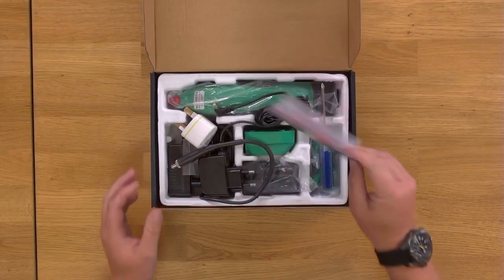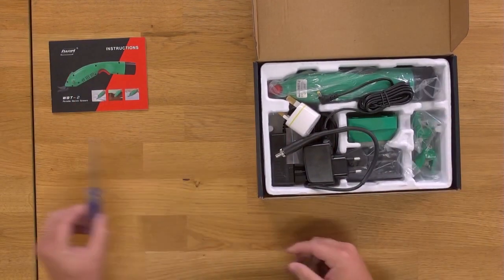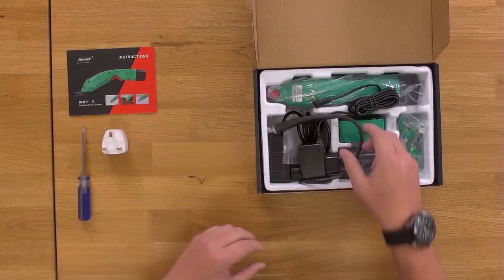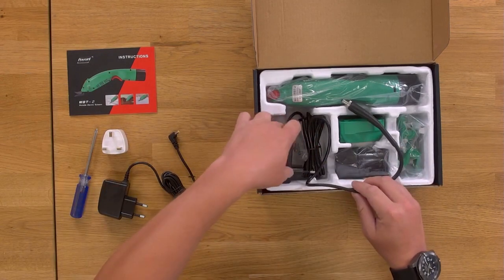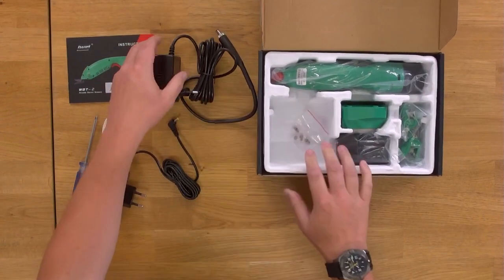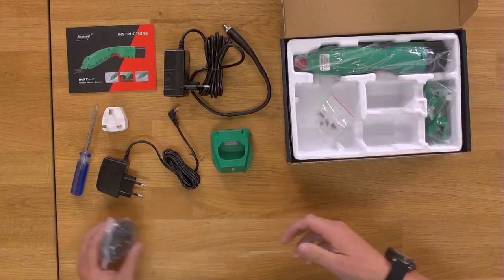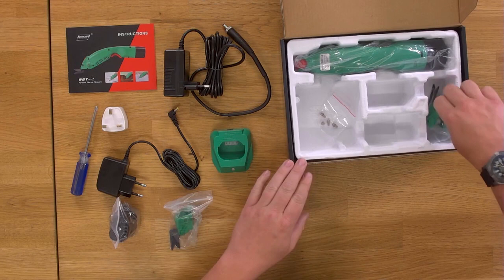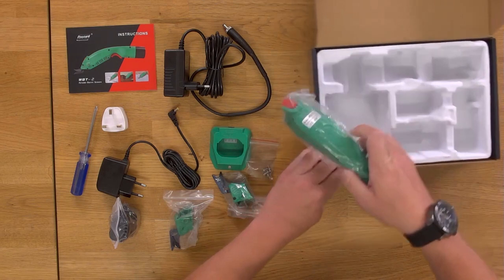What have we got in here? We've got your instruction manual, a screwdriver, a little power adapter, one power lead, a second power lead, a little charging brick, that's almost definitely the battery, these are the cutting heads, a little bag of screws, and the electric scissors itself.